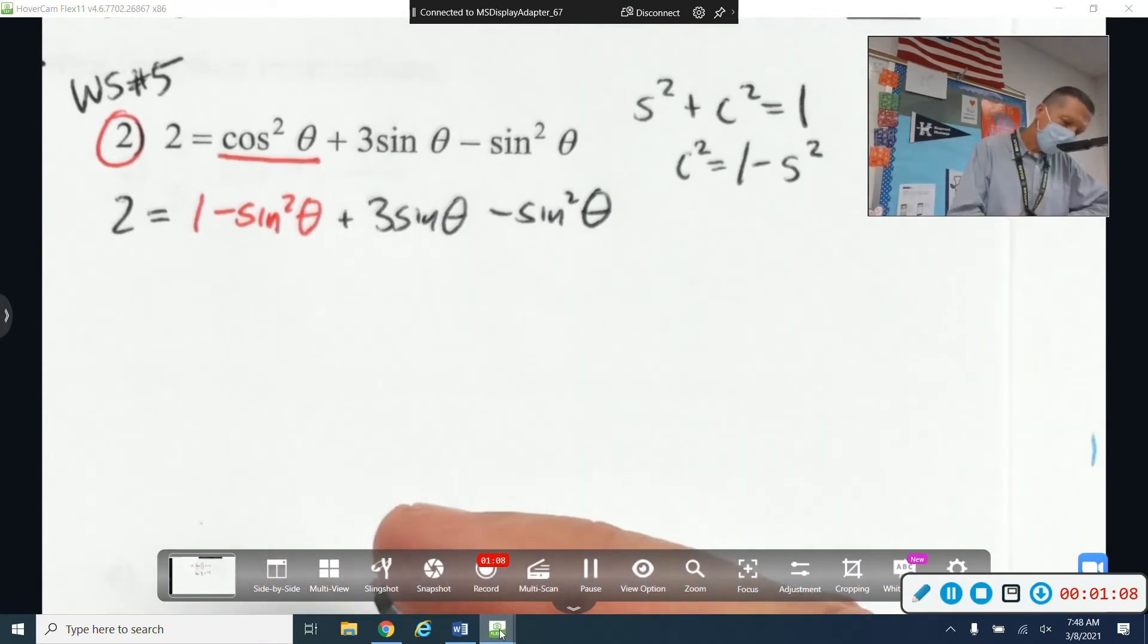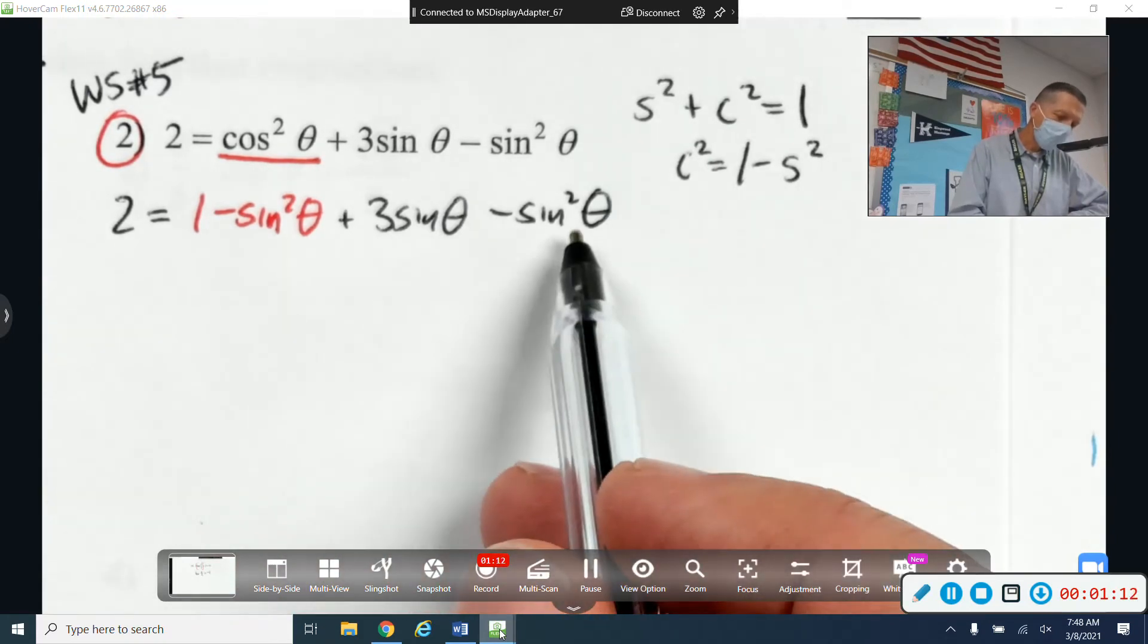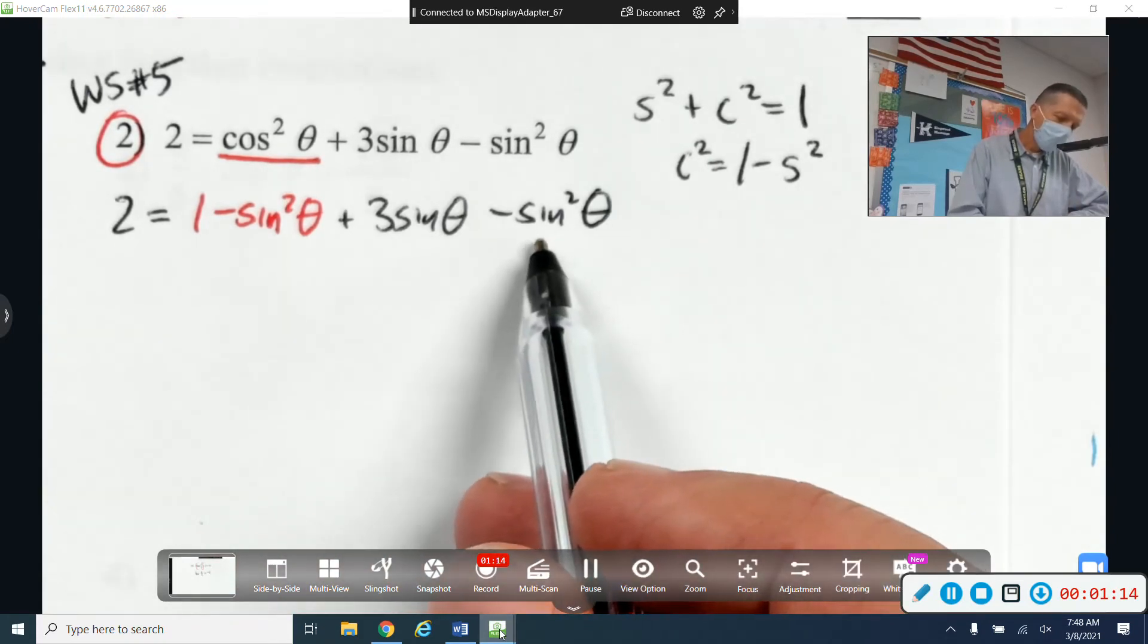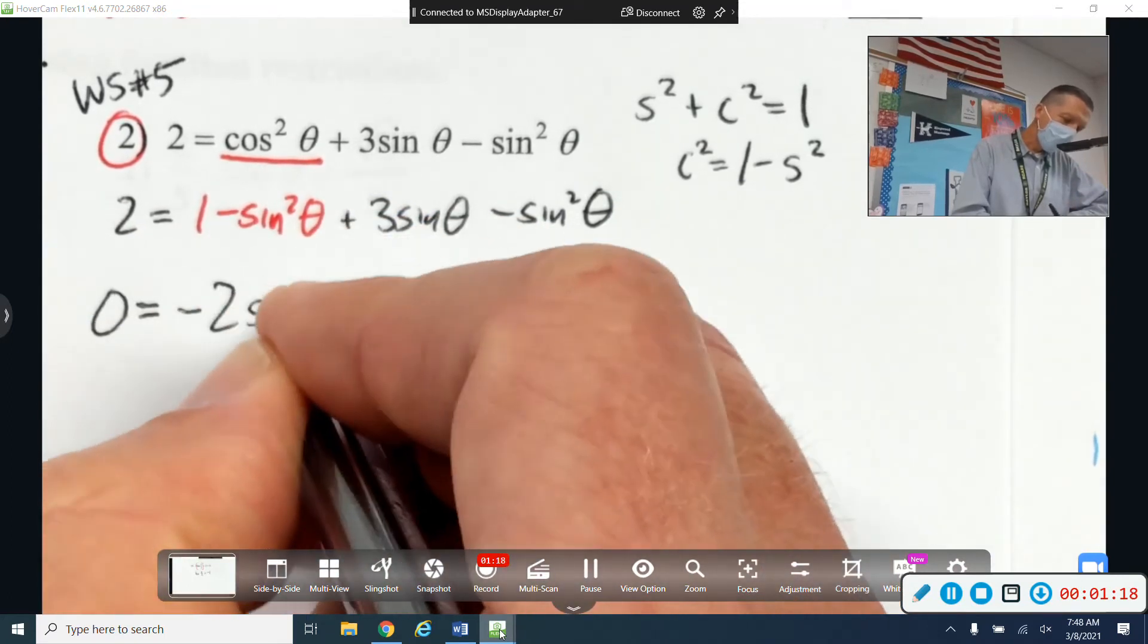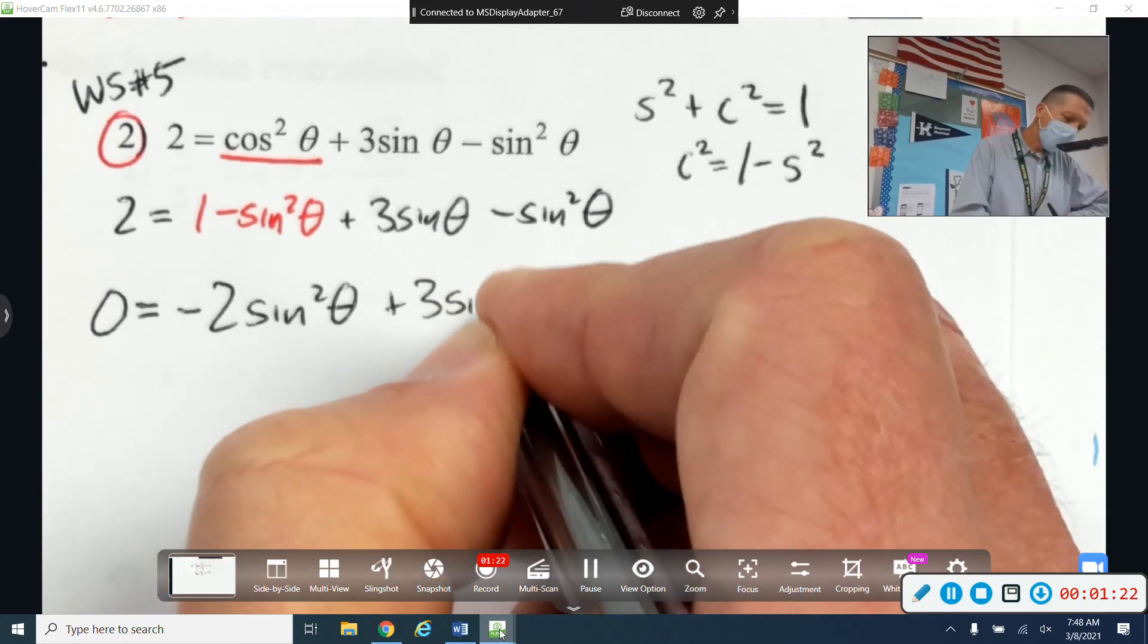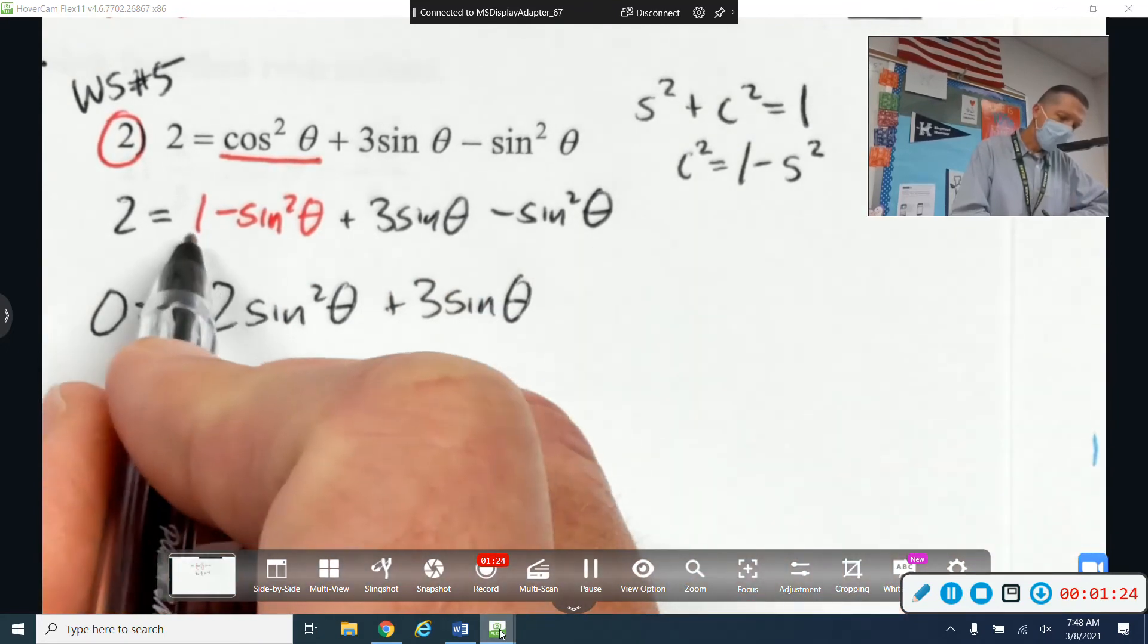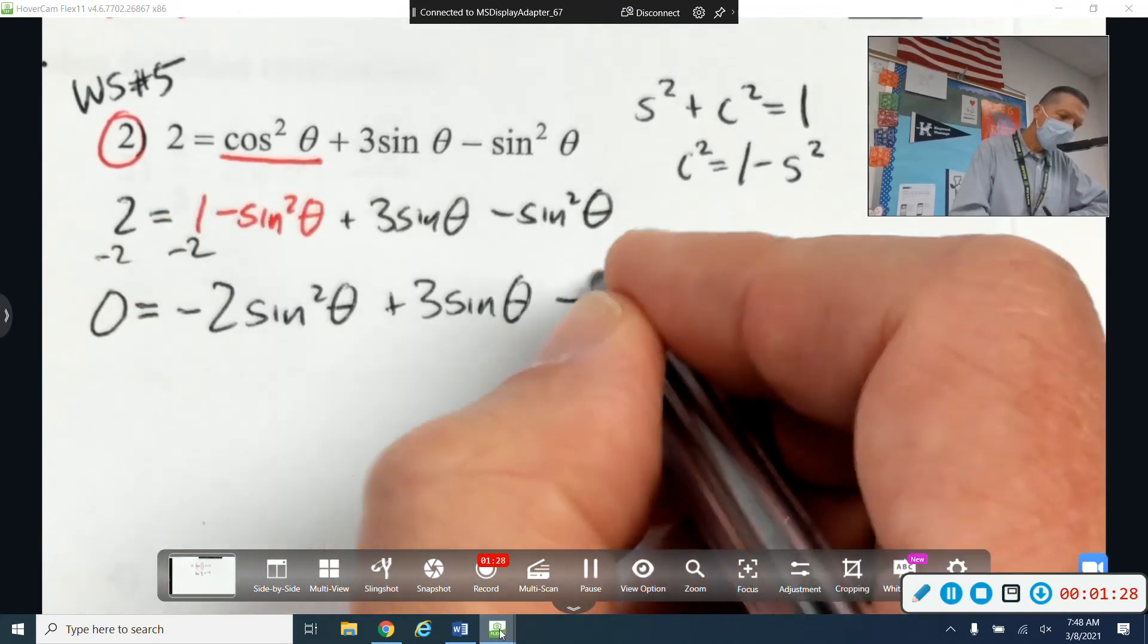Let's see. I'm going to end up with negative 2 sine squared theta, which I don't really like, but I'll fix it later. So negative 2 sine squared theta plus 3 sine theta. And then if I move the 2 over, minus 1.